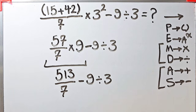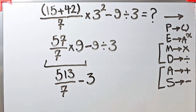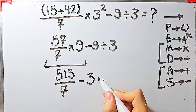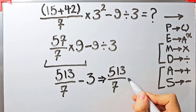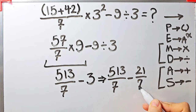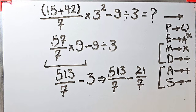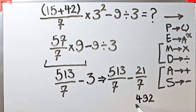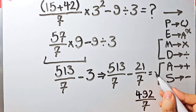Now we simplify the division: negative 9 divided by 3 equals negative 3. So we have 513 over 7 minus 3. Since the denominator is 7, we write 3 as 21 over 7. Now we have 513 over 7 minus 21 over 7, which equals 492 over 7. The final answer of this question equals 492 over 7.